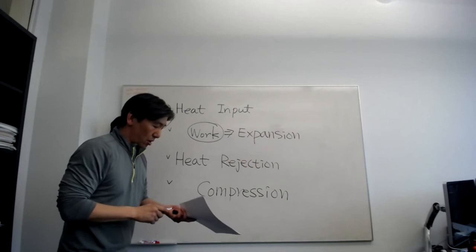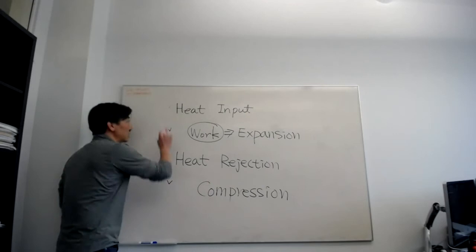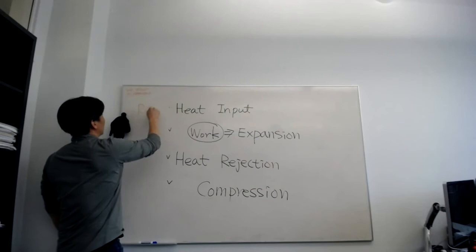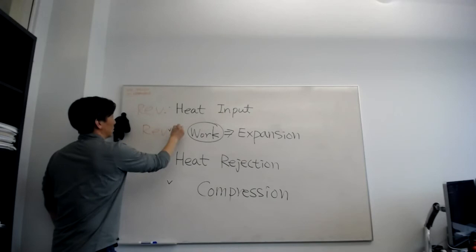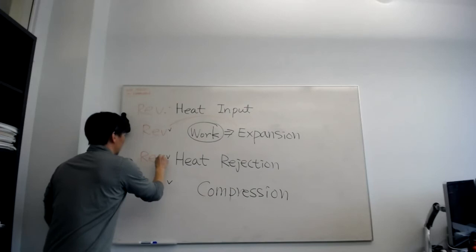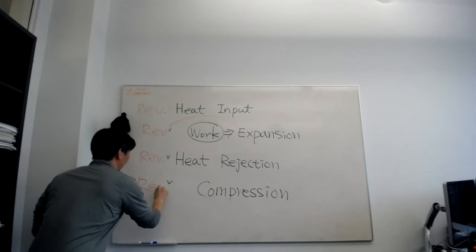Those are the very general processes. Now, what Carnot thought about was: can you really make each possible step reversible? Can we make reversible heat input, reversible expansion work, reversible heat rejection, and reversible compression?